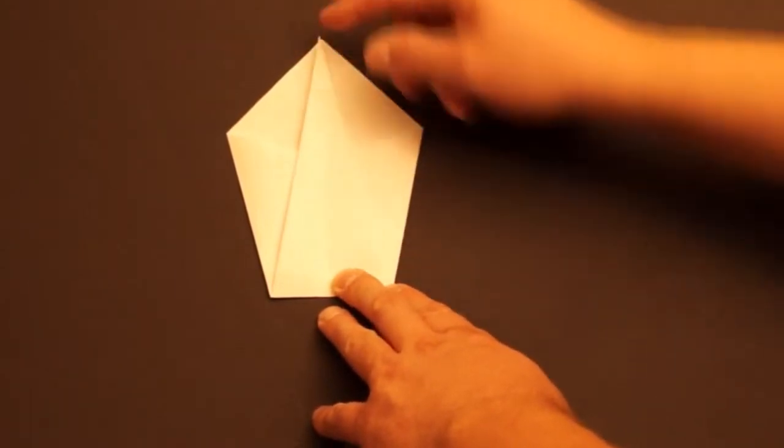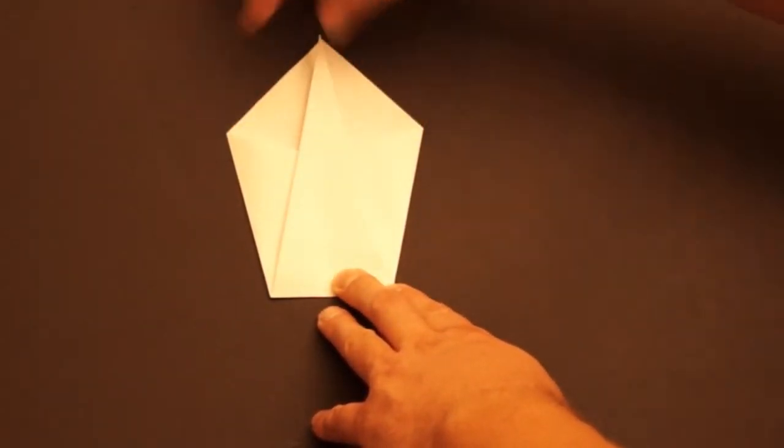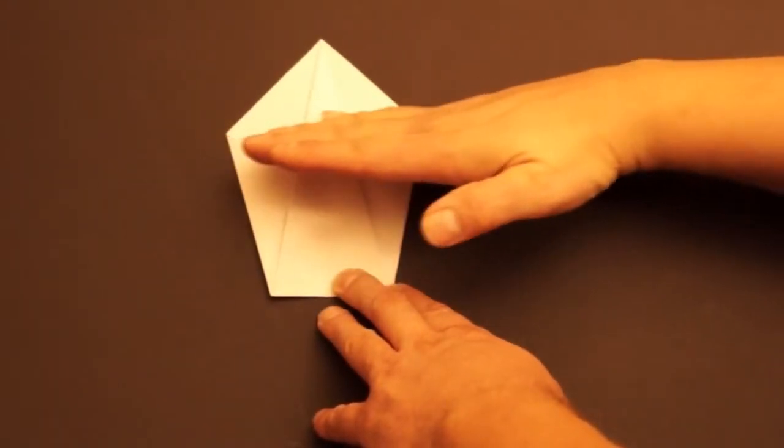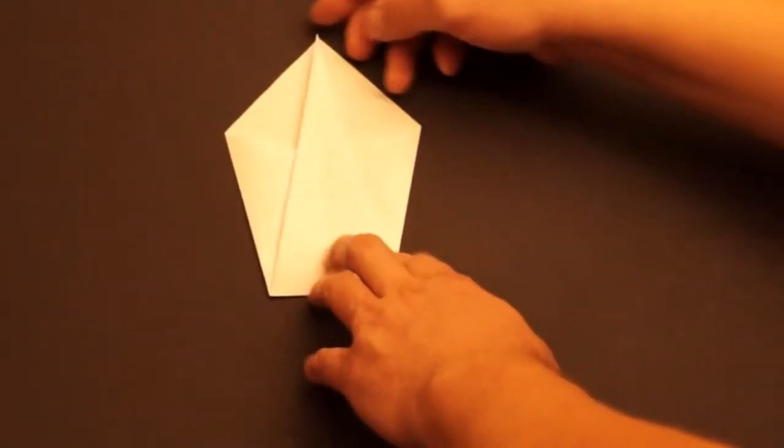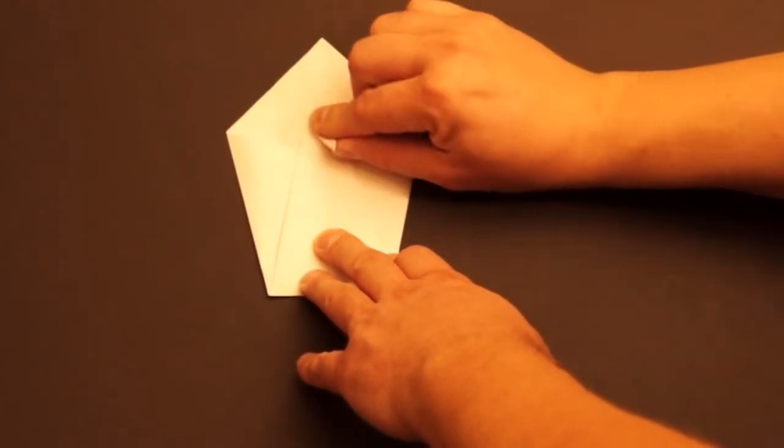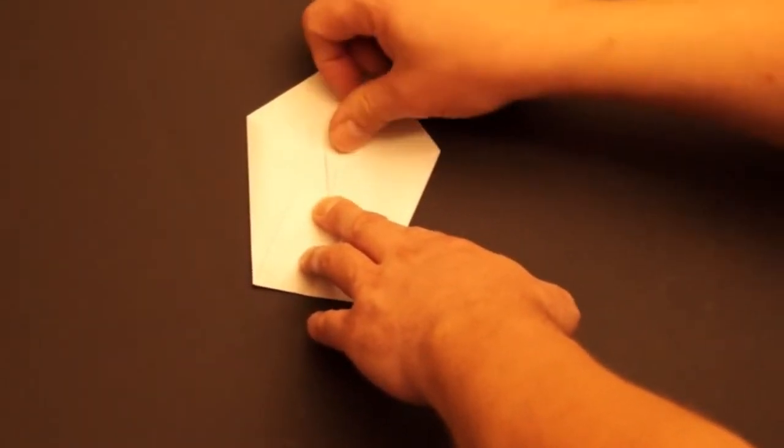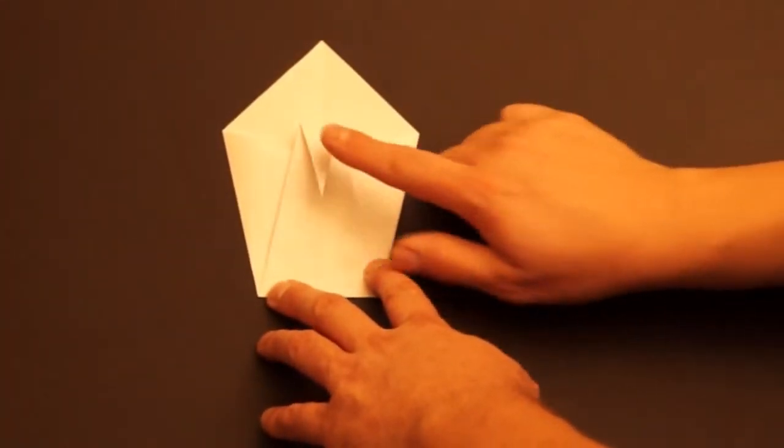Fold this top point down to where these two points are. Pretend there's a line that goes across there. That's how you fold it over. The top edge is even with that. Just like that.